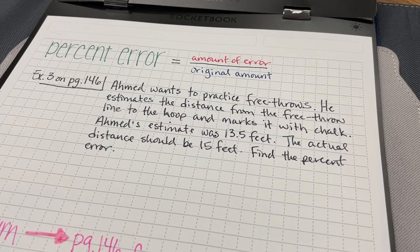Now we're going to focus on percent error. Percent error is going to equal the ratio of the amount of the error over the original amount.